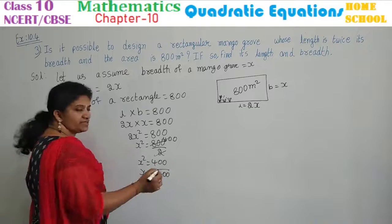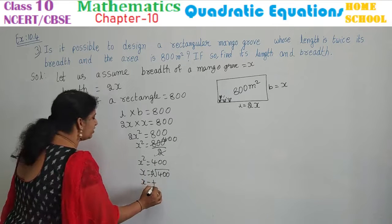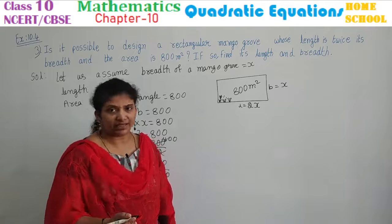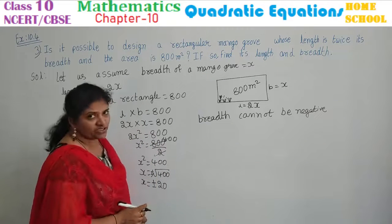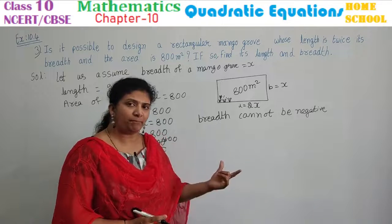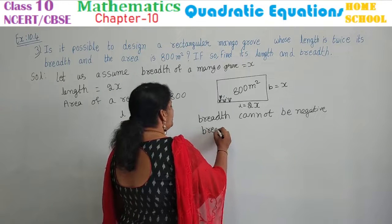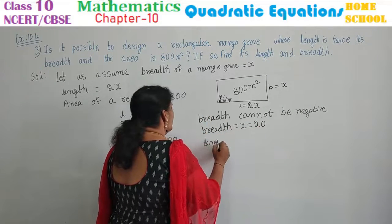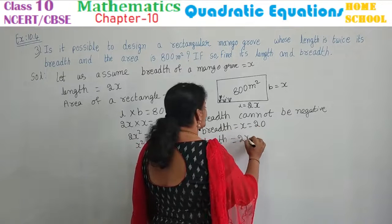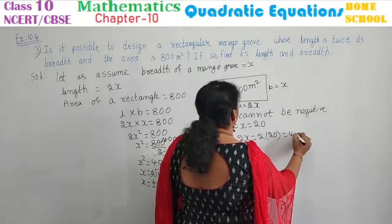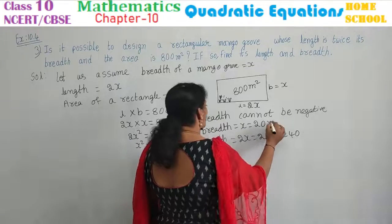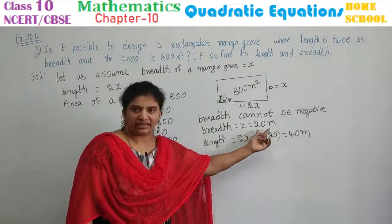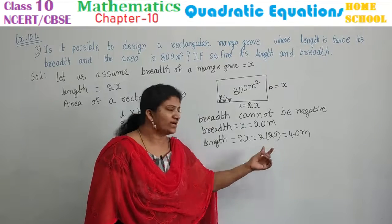400 is a perfect square, so x equals plus or minus 20. Since length or breadth can never be negative, we skip minus 20. Therefore, breadth x equals 20. Length equals twice the breadth, that is 2x equals 2 into 20, which equals 40. The unit given is meters. So, breadth of the rectangular mango grove is 20 meters and length is 40 meters.